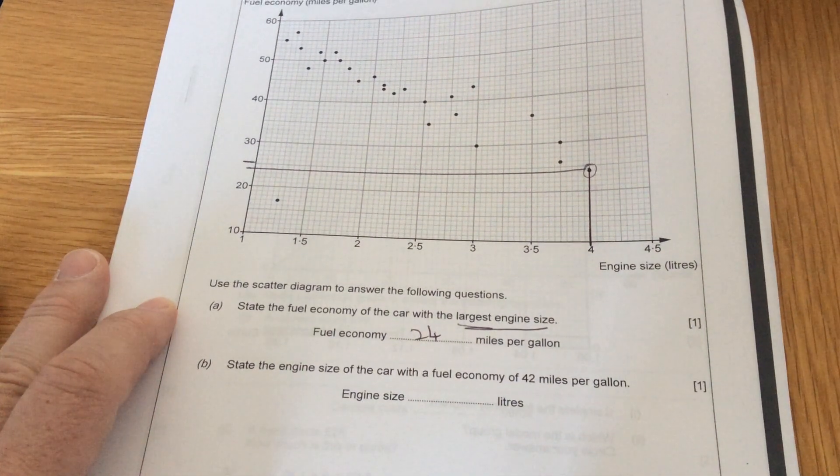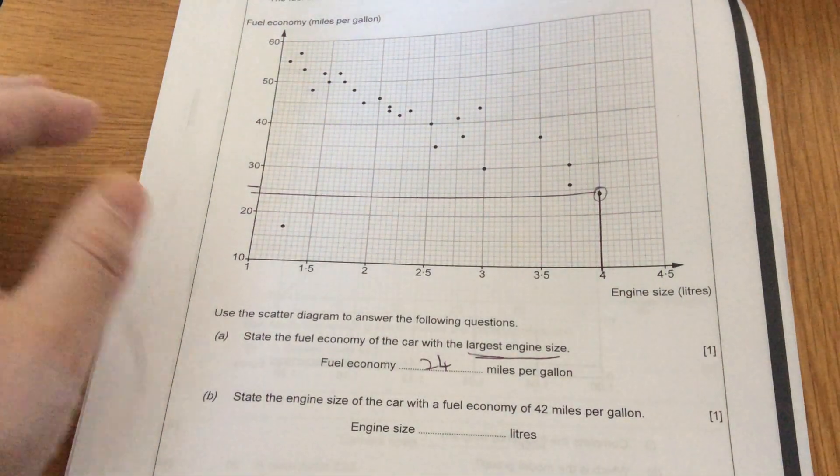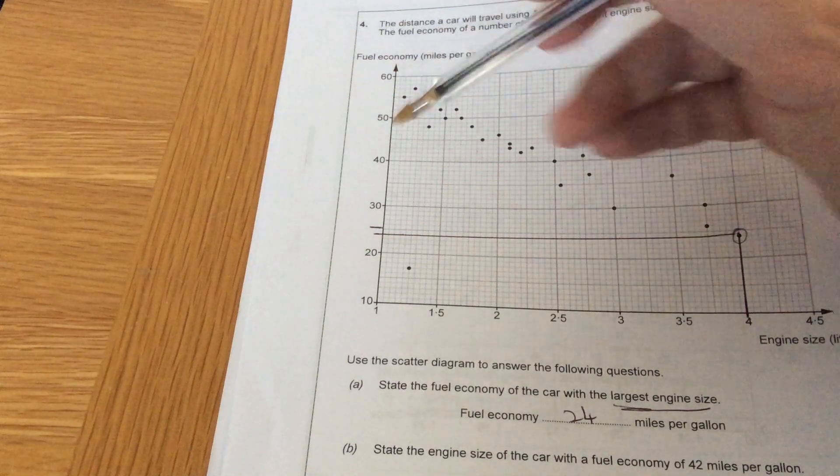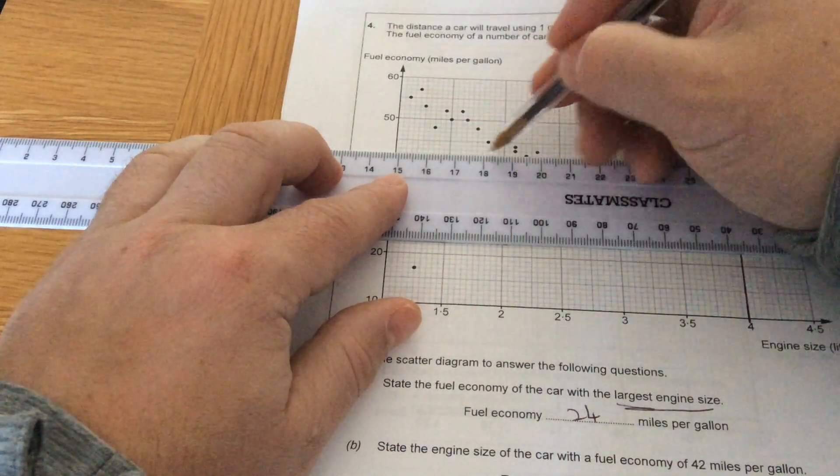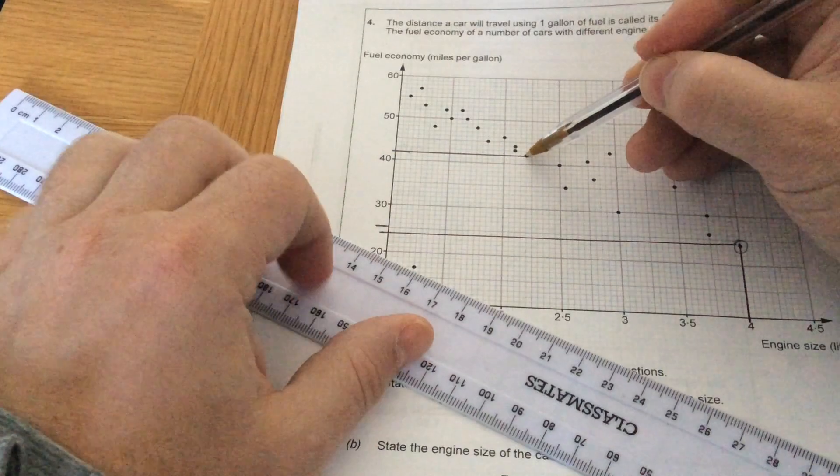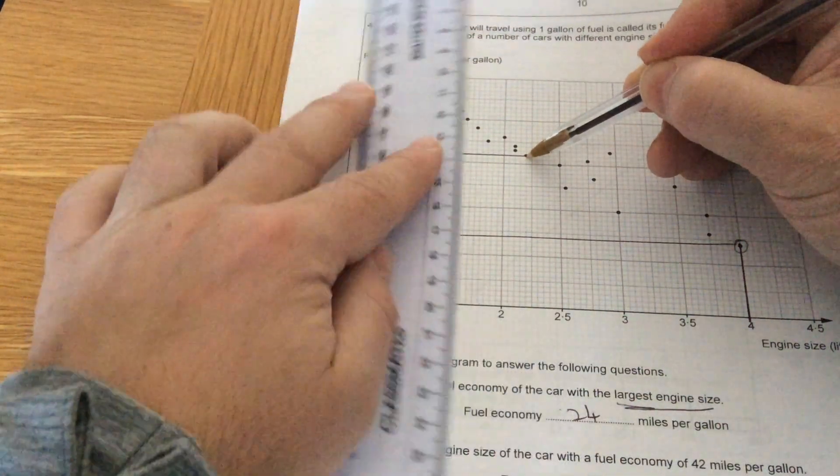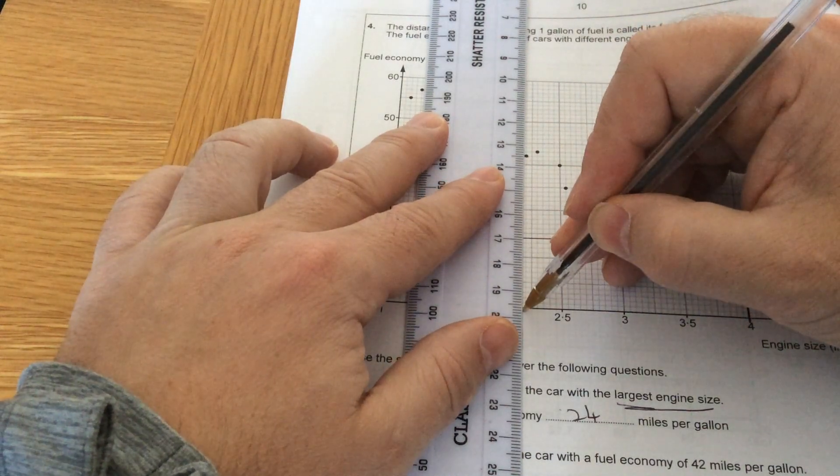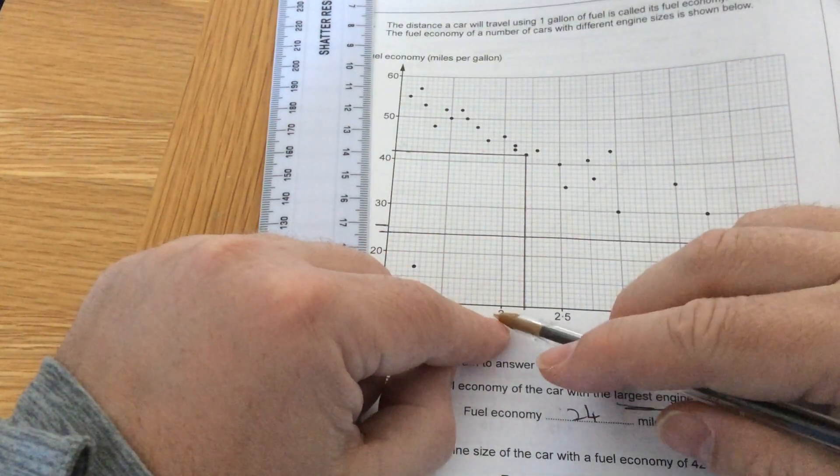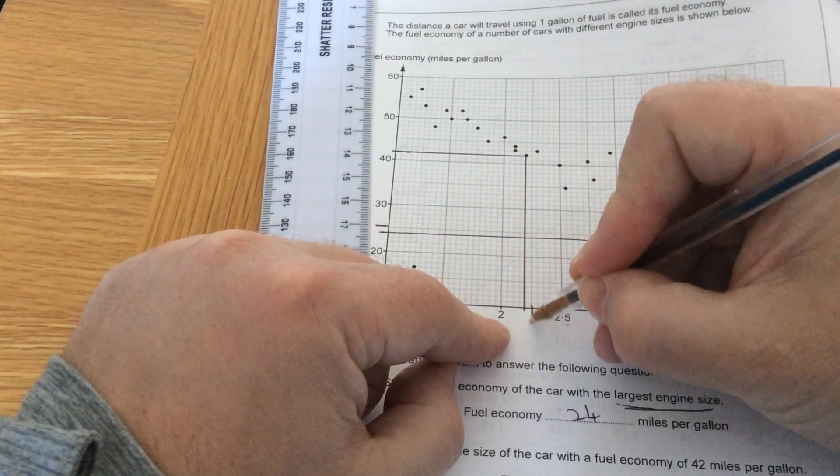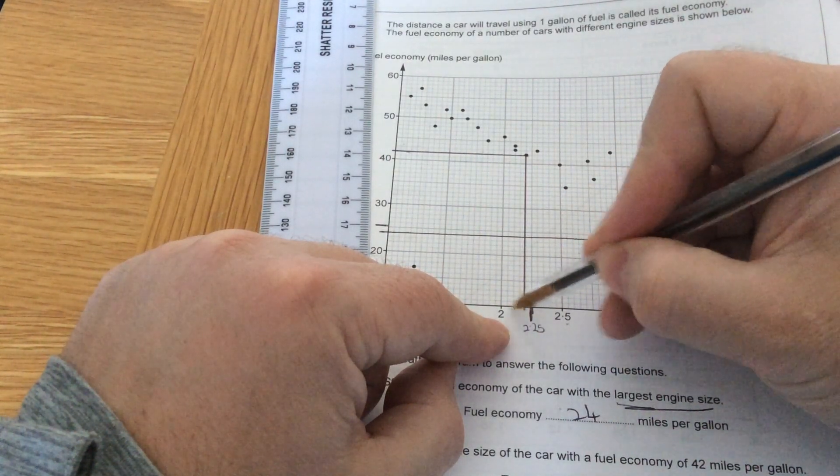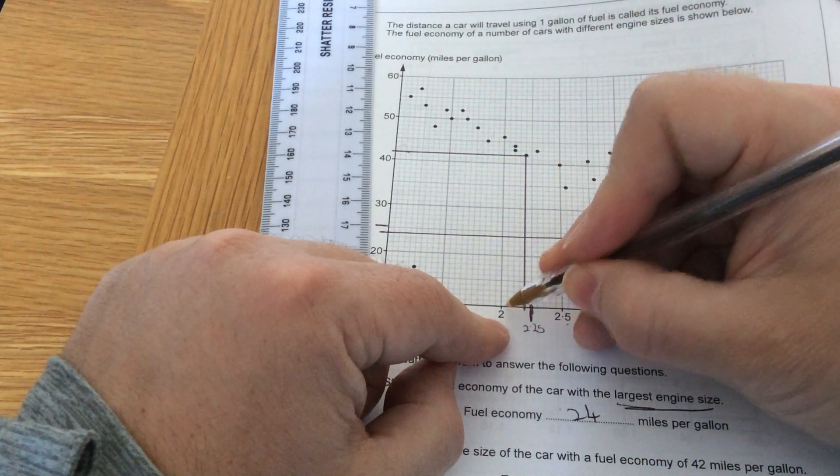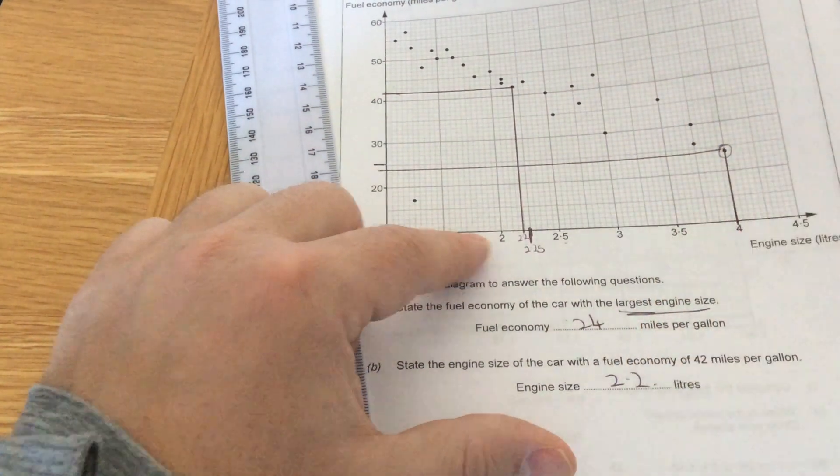Part B. State the engine size of the car with a fuel economy of 42 miles per gallon. So we're going to go up to 40. So that's 40, 41 is the next line, 42 is the one above that. So 42 is 2 above 40. I'm going to draw a line across. The only one on that line is this point. I'm going to draw a line down. That's 2, that's 2.5. In the middle will be 2.25. So 5 little squares make 0.25. So 25 divided by 5 is 5. So we're going up 2.05, 2.1, 2.15, 2.2. So the answer to this one would be 2.2 litres.